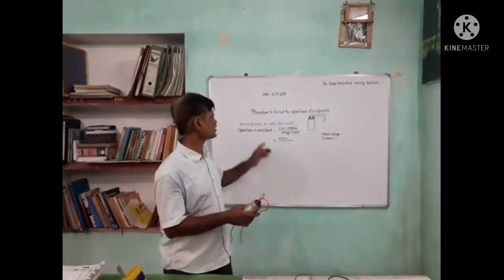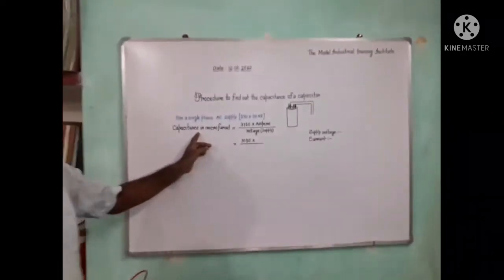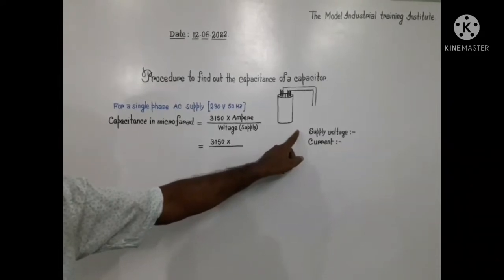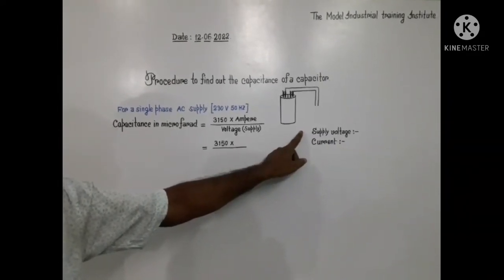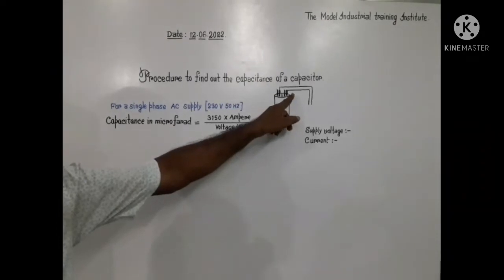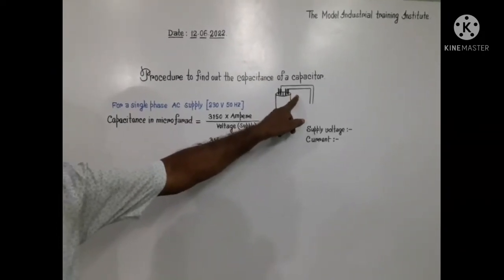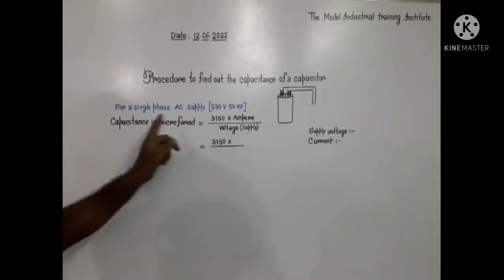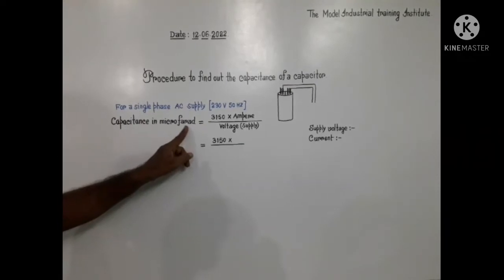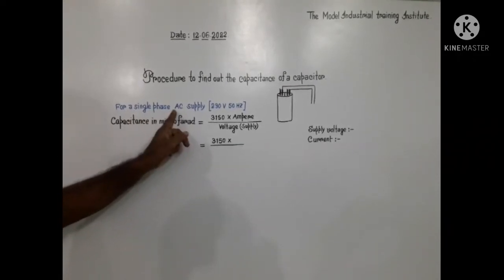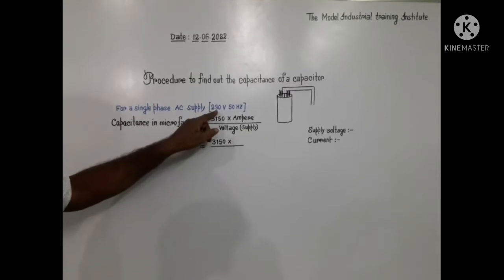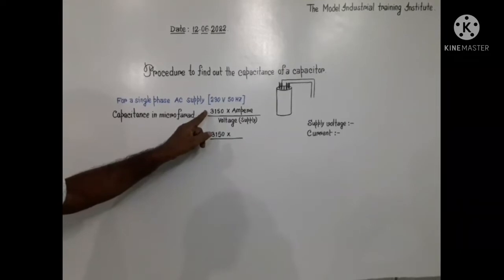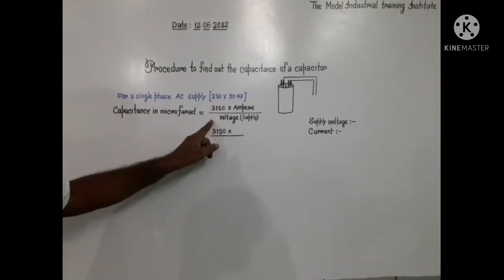At first we have to measure the supply voltage. Right at this moment what is the supply voltage and current while we will charge the capacitor, how much current it will take, that has to be measured. Finally, capacitance in microfarad for a single phase alternating current supply 230V and 50 hertz. In that case, formula is 3150 into ampere divided by voltage.